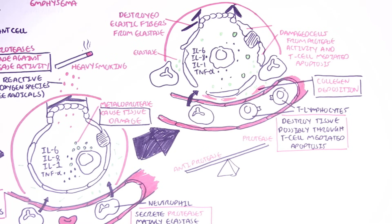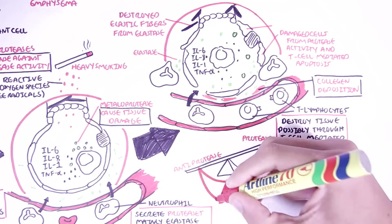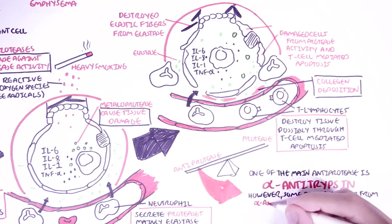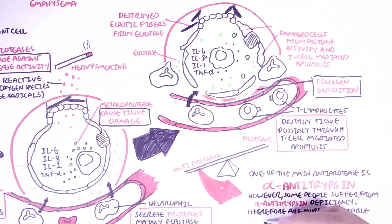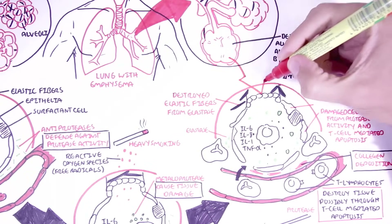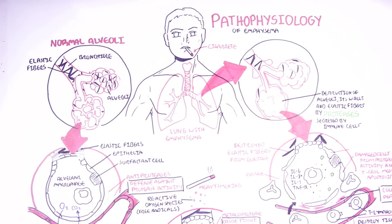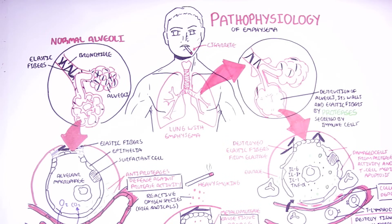Keep in mind that emphysema does not normally occur step by step as shown in this diagram. Now, in the lungs, one of the main anti-proteases is alpha-antitrypsin. However, some people suffer from alpha-antitrypsin deficiency, making them more susceptible to emphysema because there is no anti-protease activity. So the pathophysiology of emphysema is the result of the imbalance between protease and anti-protease activity, with protease activity being dominant.